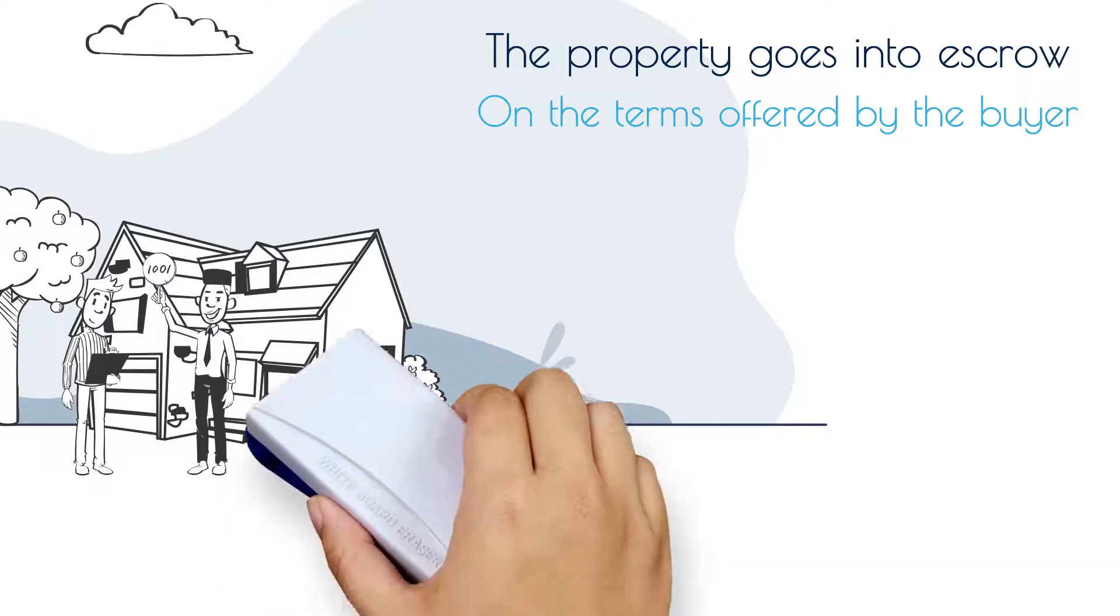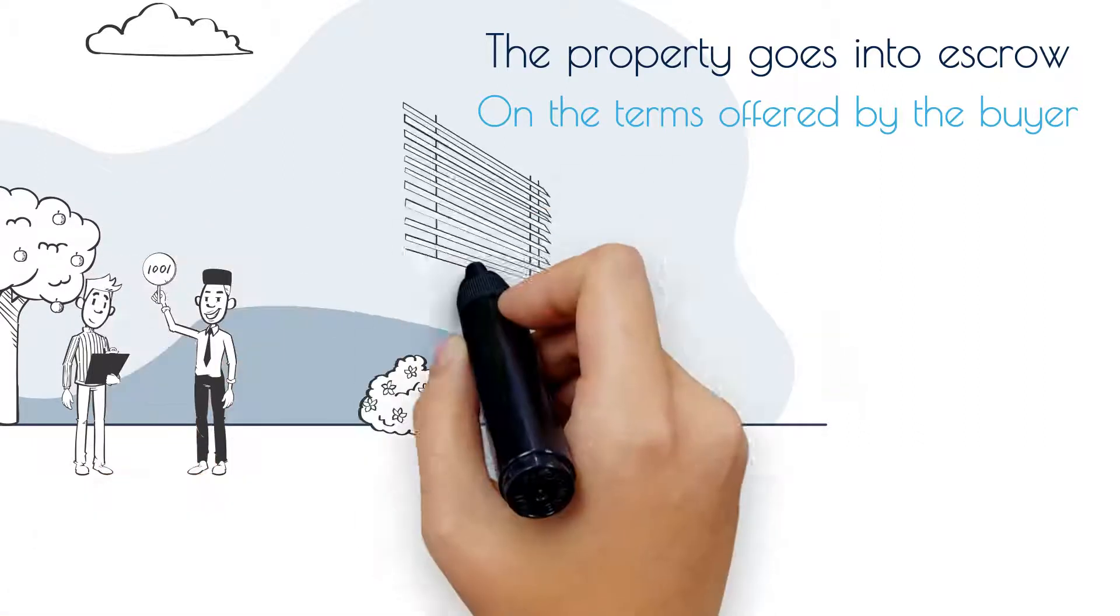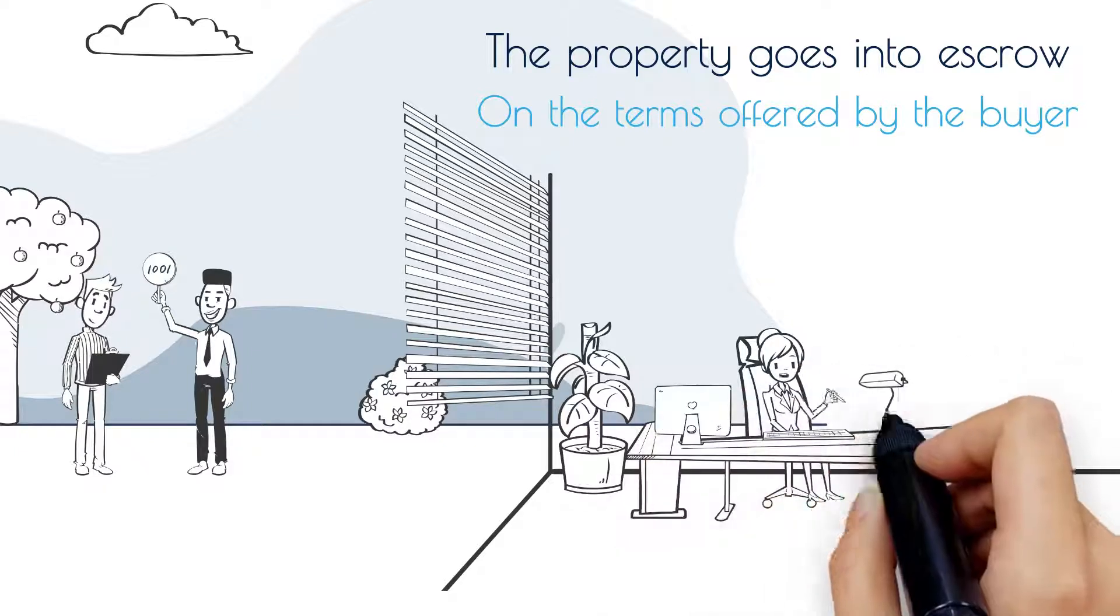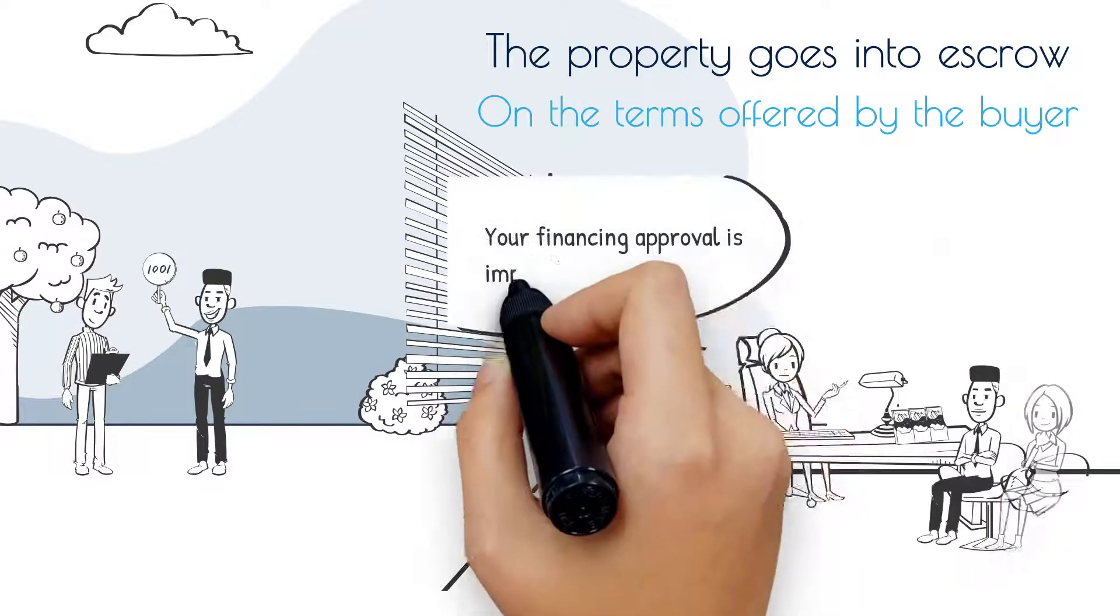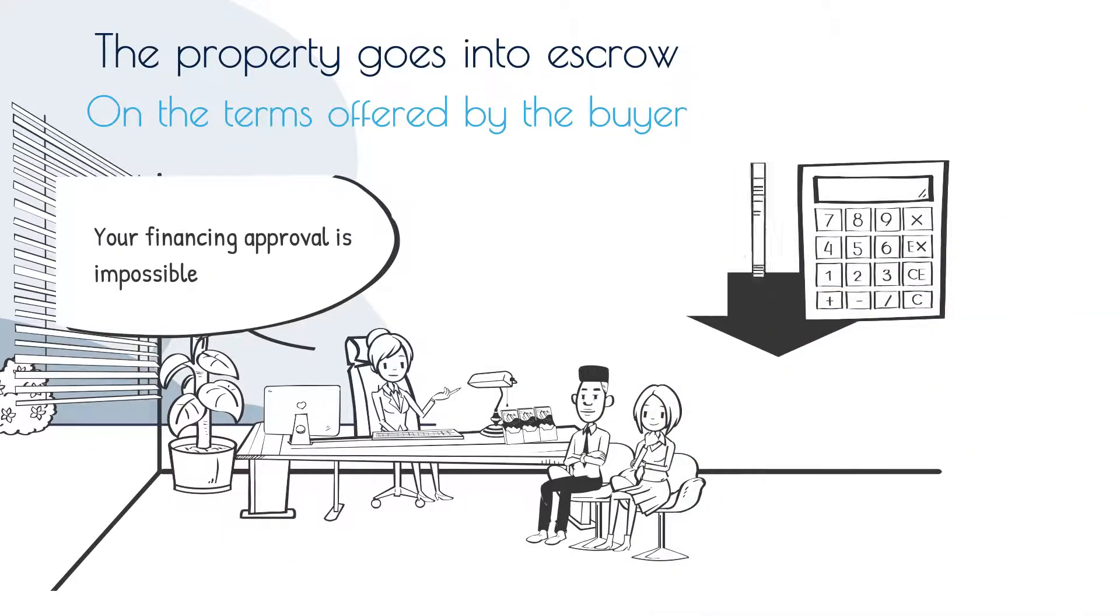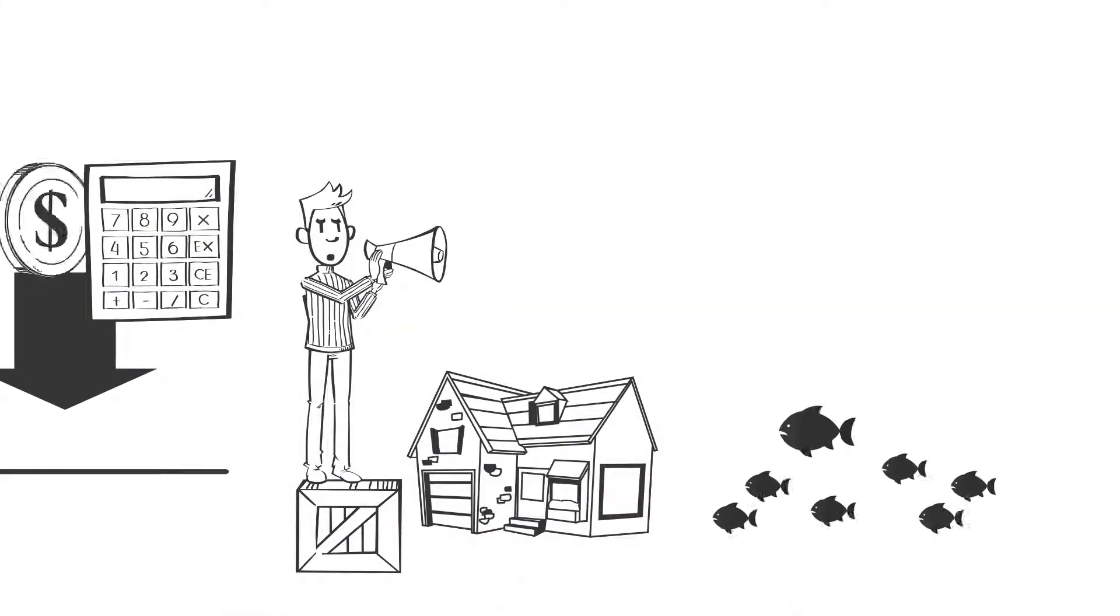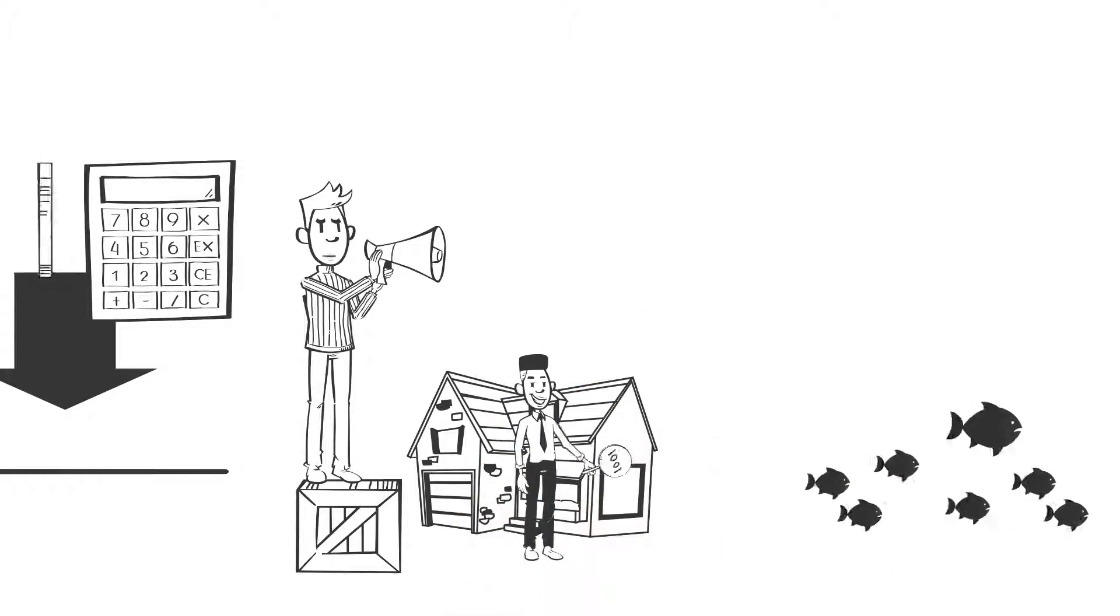The property is removed from the market. Then in escrow, the buyer decides they want to renegotiate after the inspection report, or we find out their financing approval is impossible. The escrow falls out. Now we have to go back to the market. We've allowed that buyer to keep our property away from all those other fish in the sea.